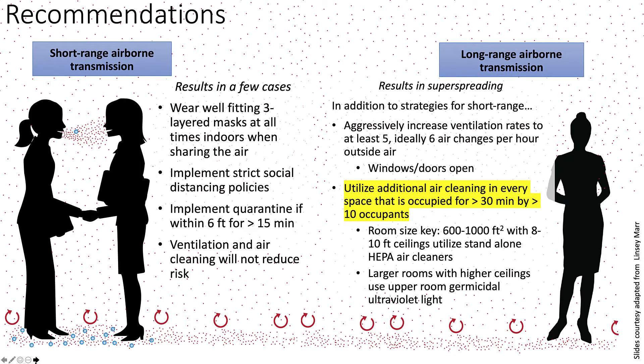These recommendations are focused on reducing long-range airborne transmission. Ventilation and air cleaning will not reduce the risk of short-range airborne transmission. However, in long-range airborne transmission scenarios, we want to aggressively increase ventilation rates by increasing outside air supply, opening windows and doors, and supplementing with additional air cleaning if you're unable to achieve enough ventilation.